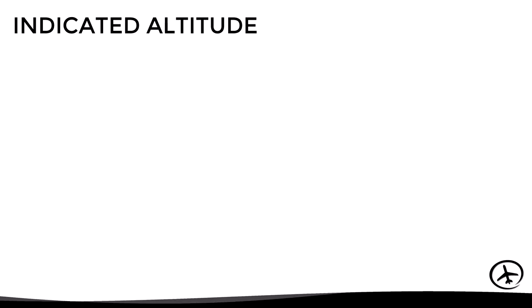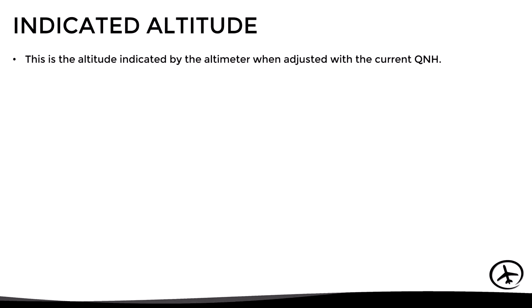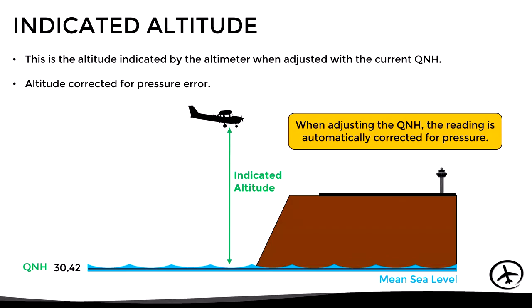Let's begin with the indicated altitude. This is defined as the altitude indicated by an altimeter when adjusted with the current QNH. We can also say that this is the altitude corrected for pressure error. In other words, when the current QNH is adjusted, the reading is automatically corrected for pressure, thus obtaining the indicated altitude. This pressure correction is necessary since the pressure at sea level is not always the same.